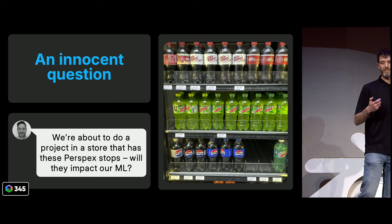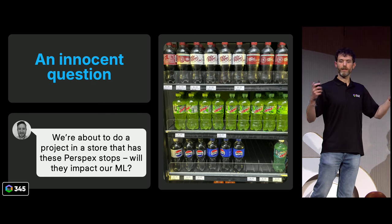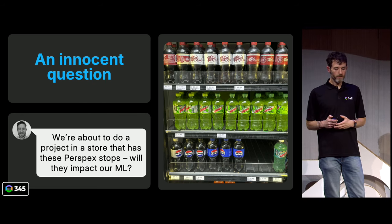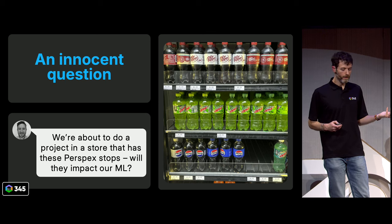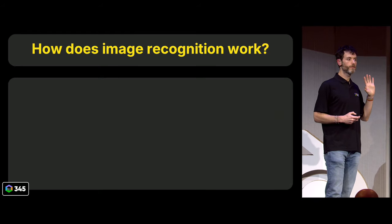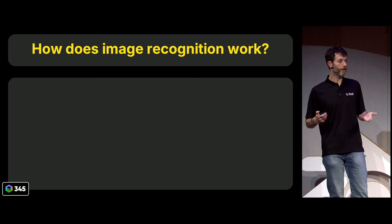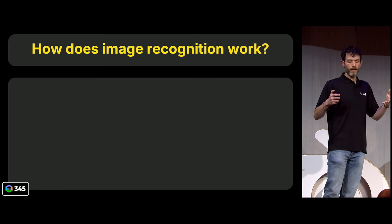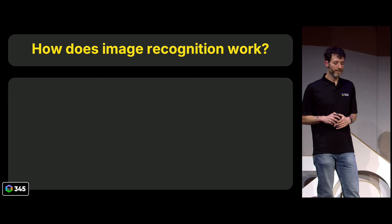Questions like this can be really hard to answer when you've got a system like this. You could go out there and capture a bunch of data, retrain your systems, do an A-B test — but it's a lot of work. So I had an idea for how we could potentially come up with an answer a bit quicker. But before that, I want to zoom out and talk a little bit about how image recognition works, or at least our version of this — one particular system. A lot of the underpinnings would be the same with other similar ML-based systems too.